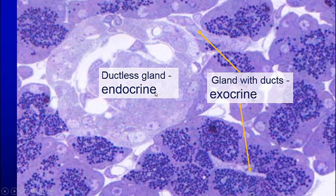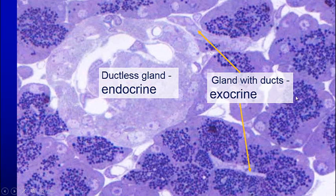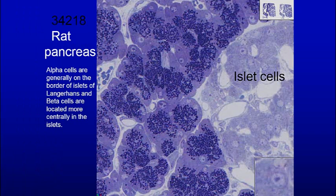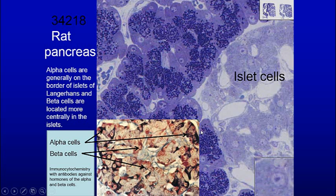The endocrine system is ductless — hormones are carried in the blood, dumped into the connective tissue around capillaries, and then travel via the portal vessel to the endocrine target. The exocrine part, in contrast, does have ducts. In the islets of Langerhans, the beta cells are more toward the center, and the alpha cells are more toward the outside.